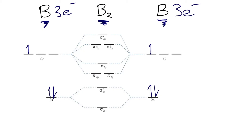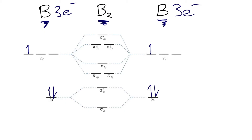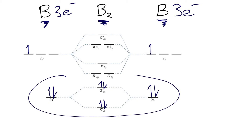Now that we have our atomic orbitals filled in, these electrons will have to fall into our molecular orbitals as bonds are formed. We'll start at the lowest energy 2s atomic and molecular orbitals. We have four electrons here, so these will fall into our sigma 2s bonding molecular orbital and our sigma 2s star antibonding molecular orbital. The lowest energy level holds two electrons, and the upper energy level also holds two electrons, so this entire area is now filled in with electrons.